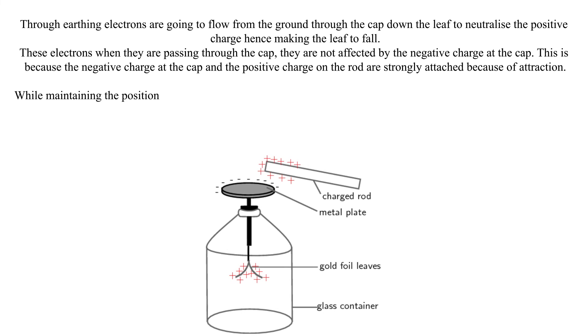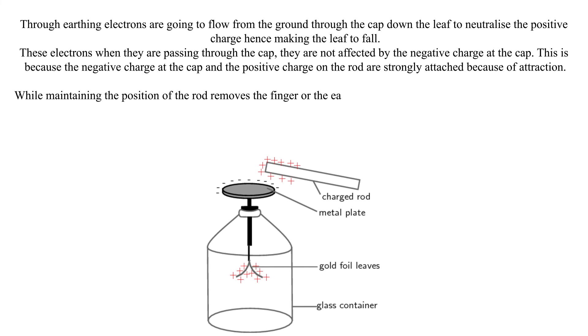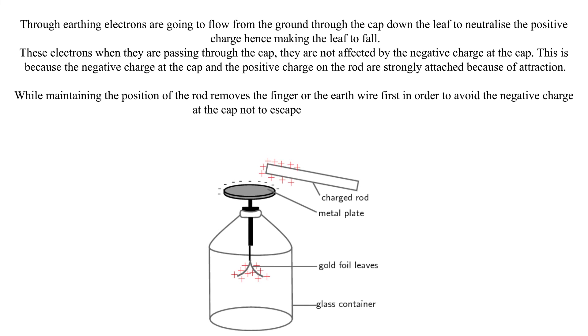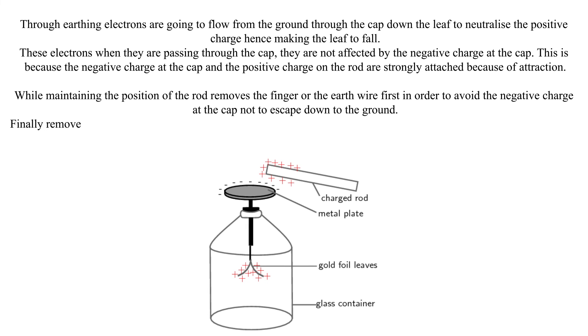While maintaining the position of the rod, remove the finger or the earth wire first in order to avoid the negative charge at the cap escaping down to the ground. Finally, remove the positively charged rod away from the cap.